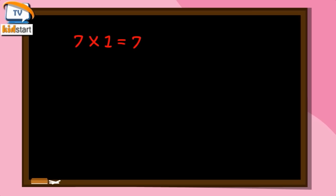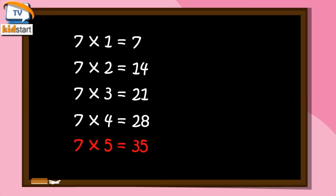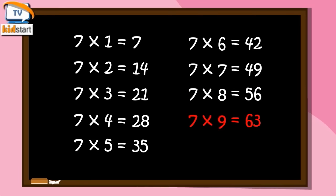Seven ones are seven. Seven twos are fourteen. Seven threes are twenty-one. Seven fours are twenty-eight. Seven fives are thirty-five. Seven sixes are forty-two. Seven sevens are forty-nine. Seven eights are fifty-six. Seven nines are sixty-three. Seven tens are seventy.